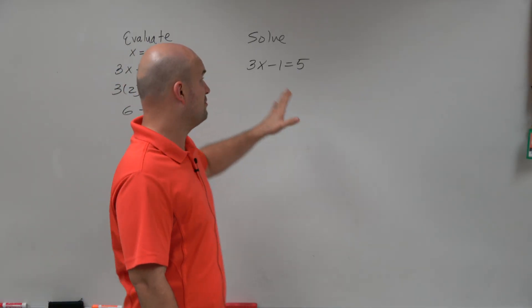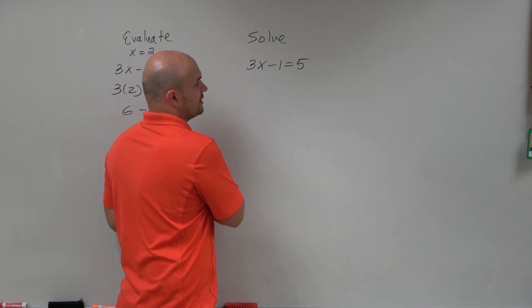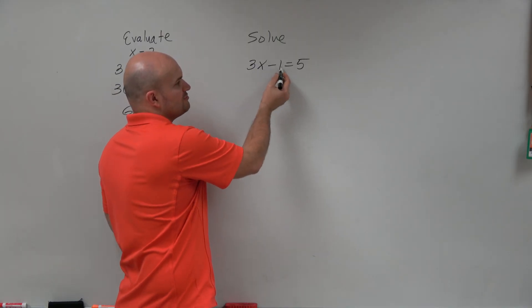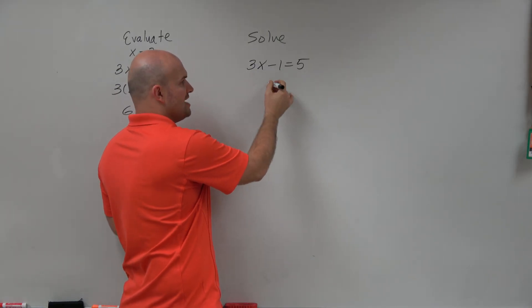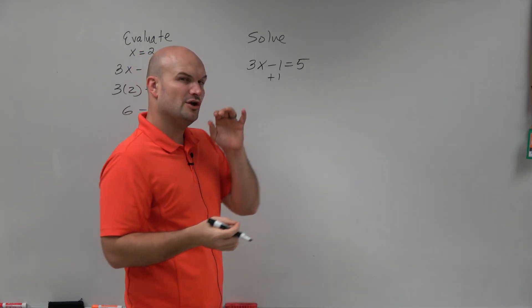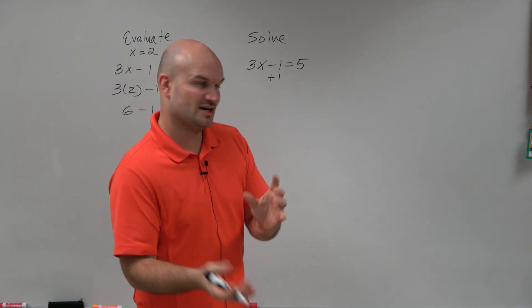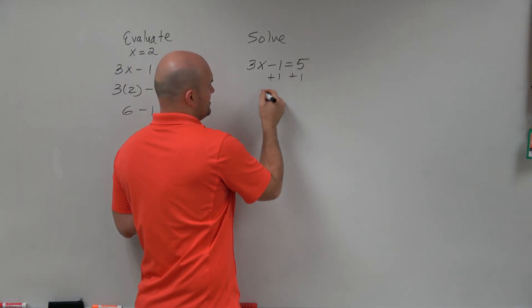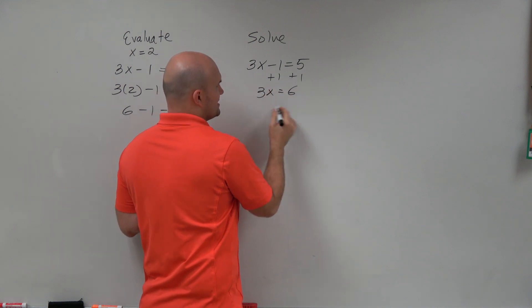So when solving, we follow the reverse order of operations. We want to solve for x. The first thing we're going to do is undo subtracting by 1. So to undo subtracting, we're going to take the inverse. Notice how undoing and inverse are connected. So I plus 1, then I get 3x is equal to 6.